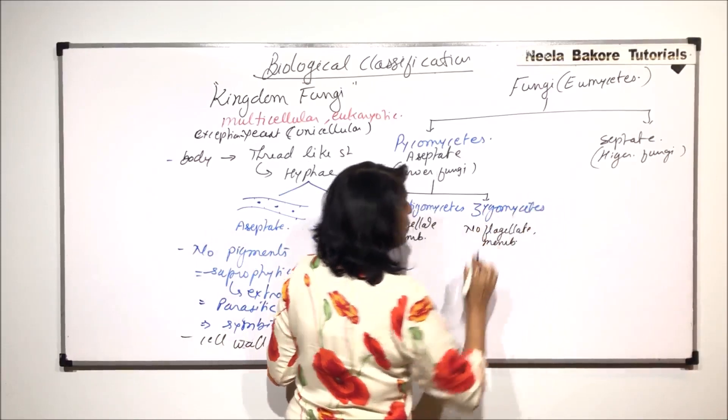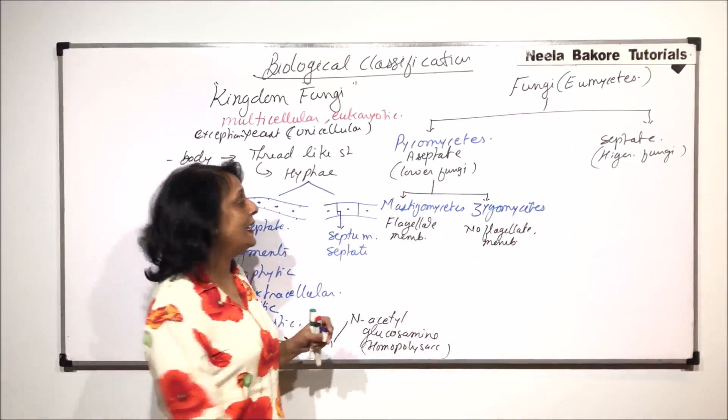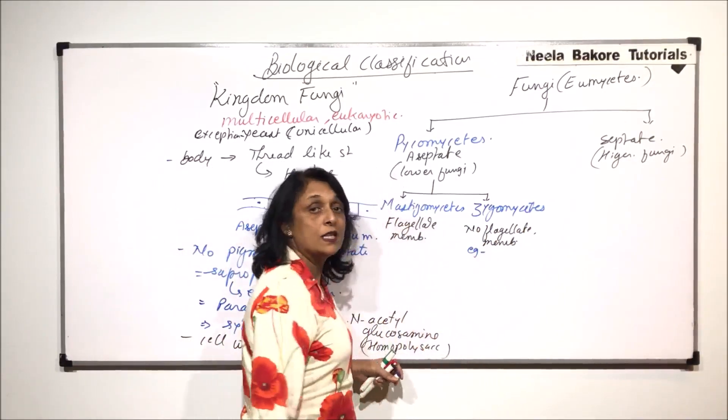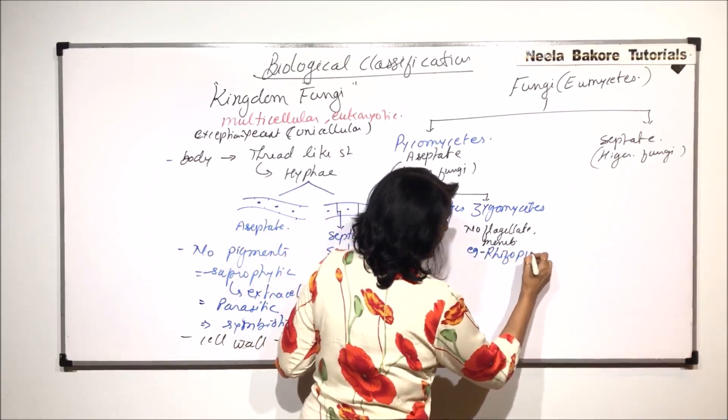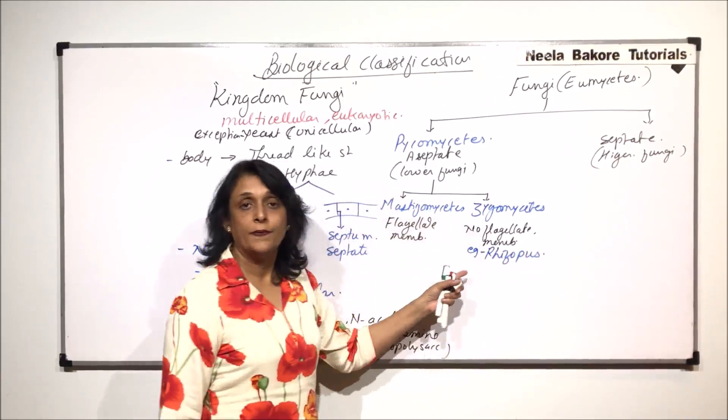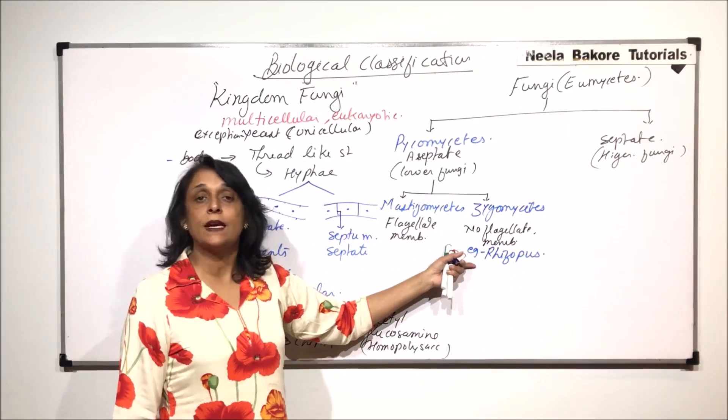We have to talk about few groups in detail. And this is one. In zygomycetes, we'll be talking about rhizopus and mucor. So we'll take these two examples and study their life cycle.